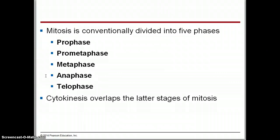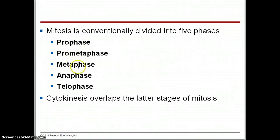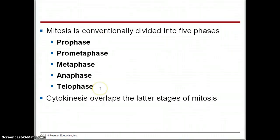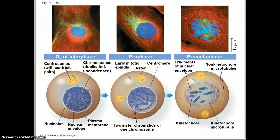Let's look at mitosis a little bit more. Mitosis can be broken down into phases. This book divides it into five phases: prophase, prometaphase — kind of halfway between prophase and metaphase — metaphase, anaphase, and telophase. Cytokinesis is going to overlap a little bit with those later stages; that's when the cells are going to physically divide. Mitosis is the separation and division of the DNA, while cytokinesis is the physical separation of the cell itself.